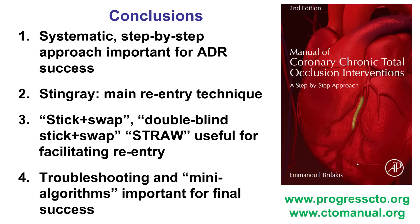In summary, like every other CTO technique, it is important for antegrade dissection reentry to have a systematic step-by-step approach, troubleshooting any issues that may arise. For reentry, the Stingray system remains the mainstay as it provides the most accurate reentry, minimizing dissection length. The technique for reentry is currently in most cases the stick-and-swap or the double-blind stick-and-swap, with the STRAW technique being useful for decompressing hematoma. Like every other part of CTO, it is important to have troubleshooting and mini-algorithms to achieve final success.